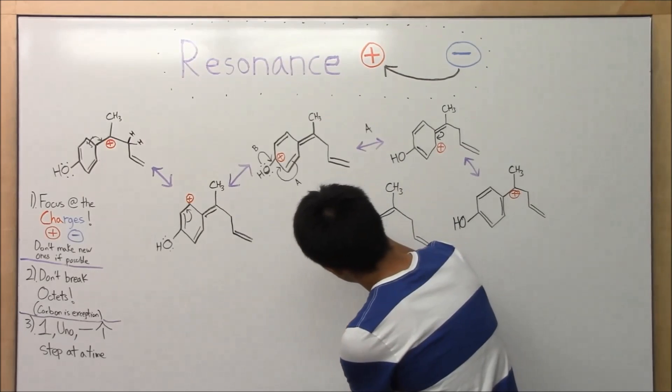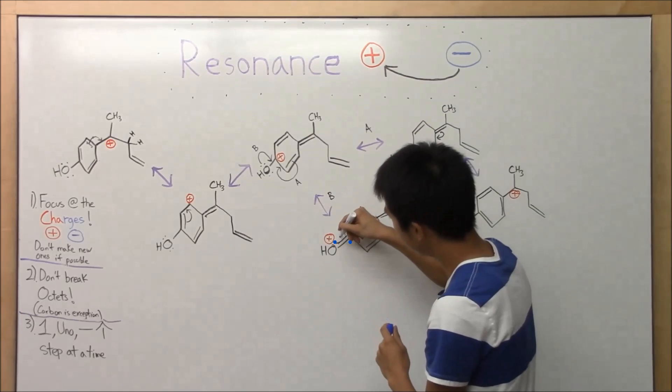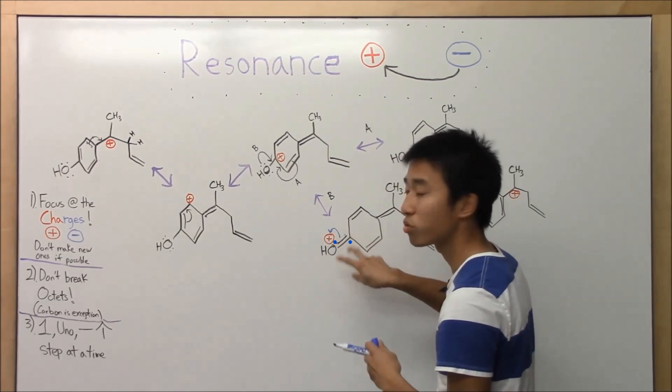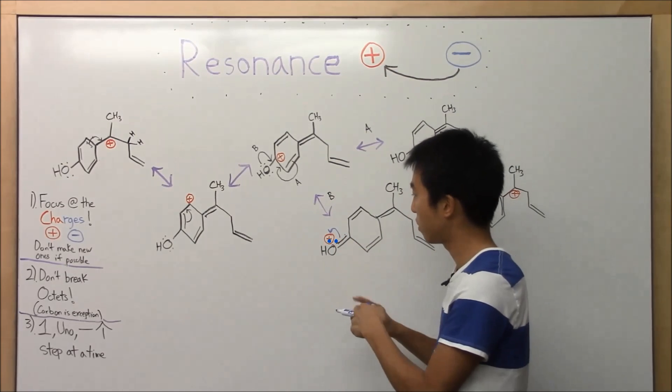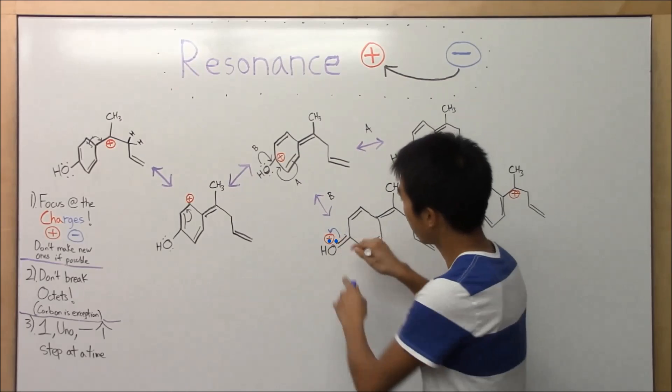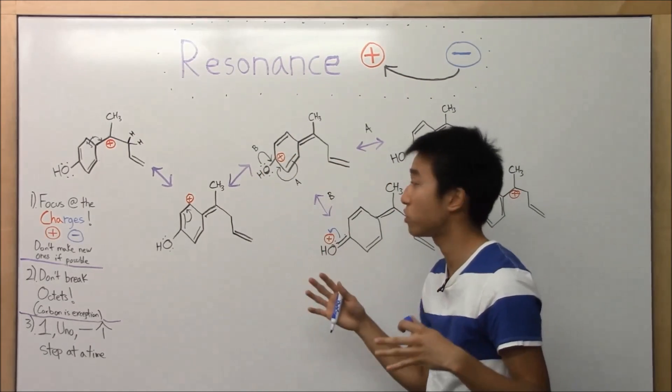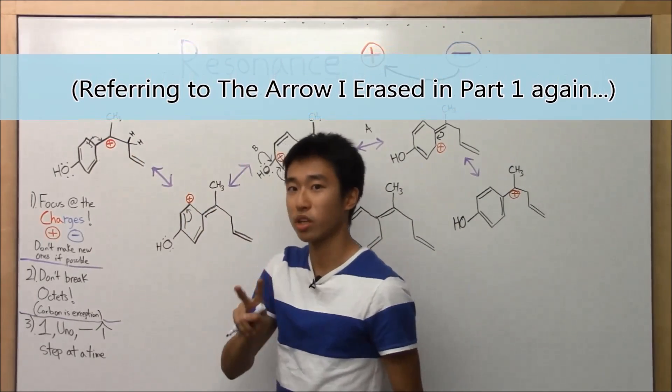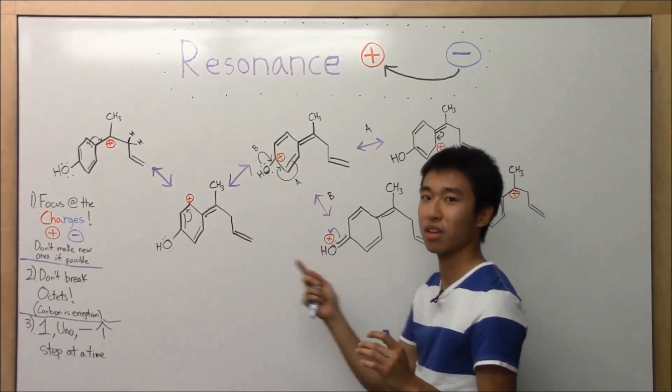Because oxygen's really only getting one electron in this scenario. Because it's going to go back. These two electrons are going to go back there. Oxygen's going to lose the positive charge. But in this scenario, it's no good because carbon's getting two electrons. Not one. Very important.